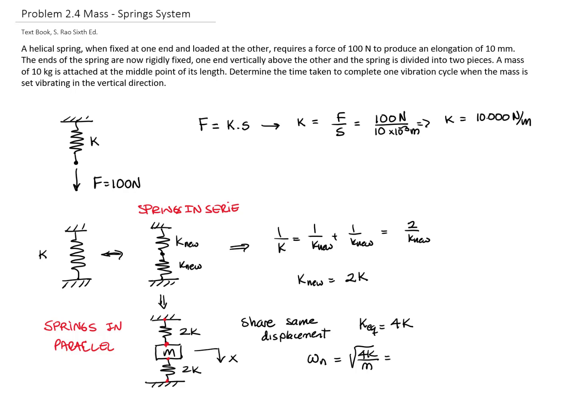If I substitute the constant of the spring that we got in the first step, 10,000, divided by the 10 kilograms that they say is the mass, I get a natural frequency of 63.25 radians per second.